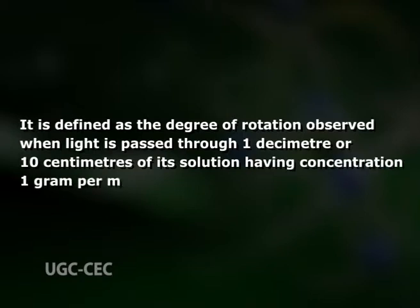This property of a substance of rotating the plane of polarized light is called optical activity, and the substance possessing it is said to be optically active. For the measurement of optical rotations, a term called specific rotation is introduced. This is a physical constant characteristic of a substance, much like the melting point, boiling point, density, or refractive index. It is defined as the degree of rotation observed when light is passed through one decimeter, or 10 cm, of a solution having a concentration of one gram per milliliter.